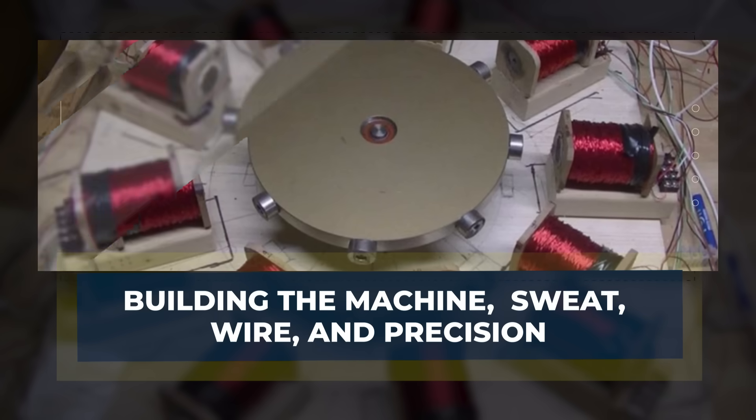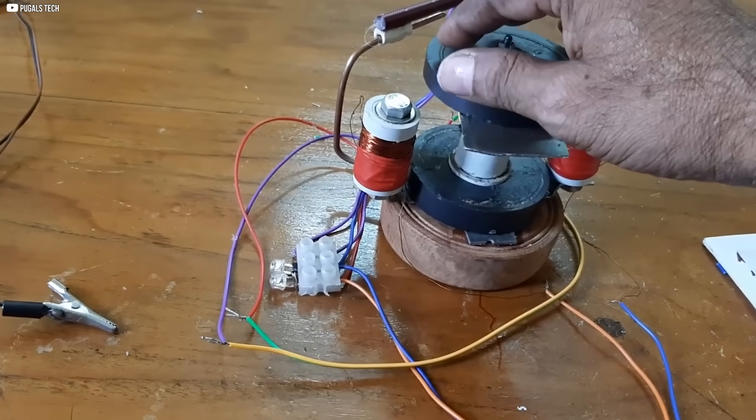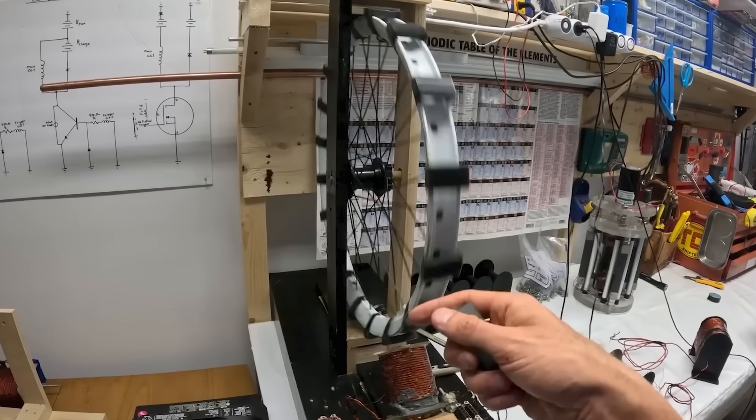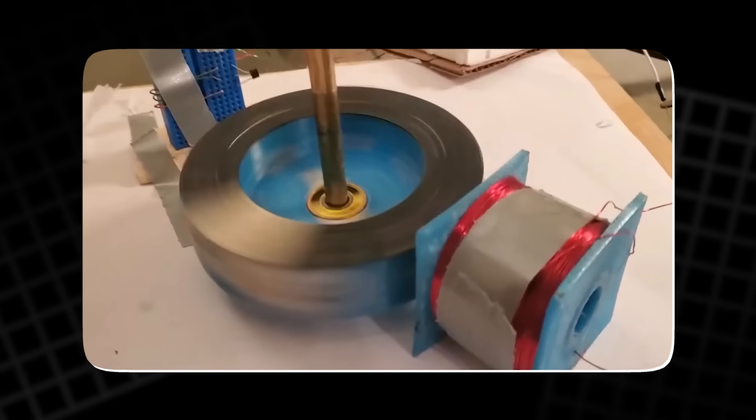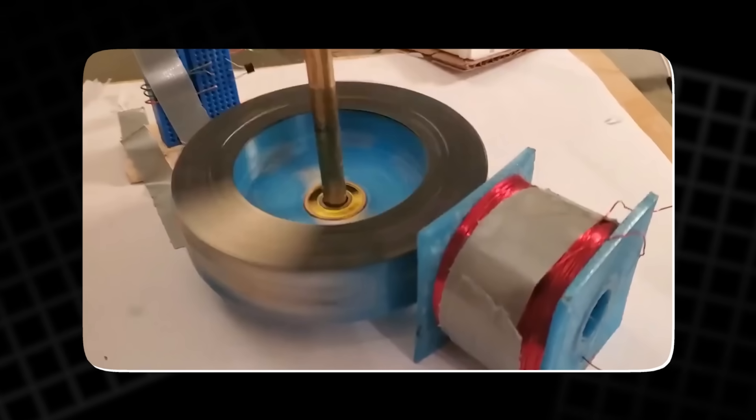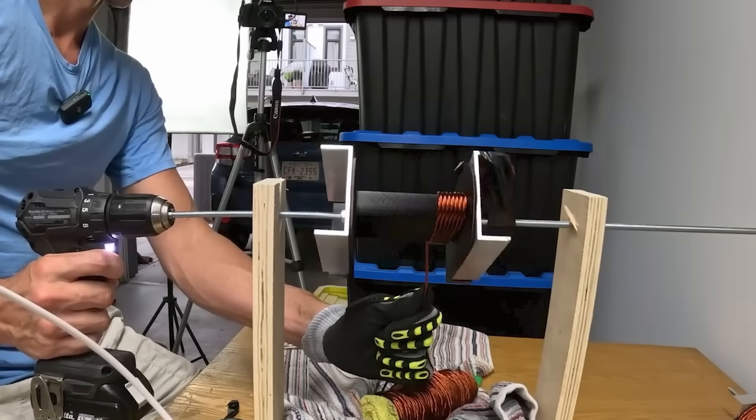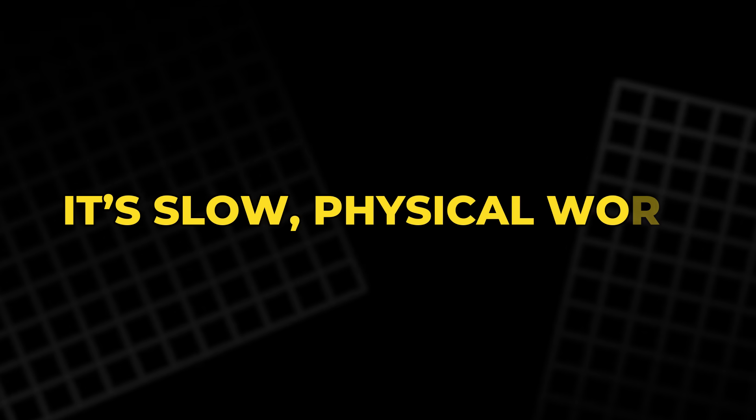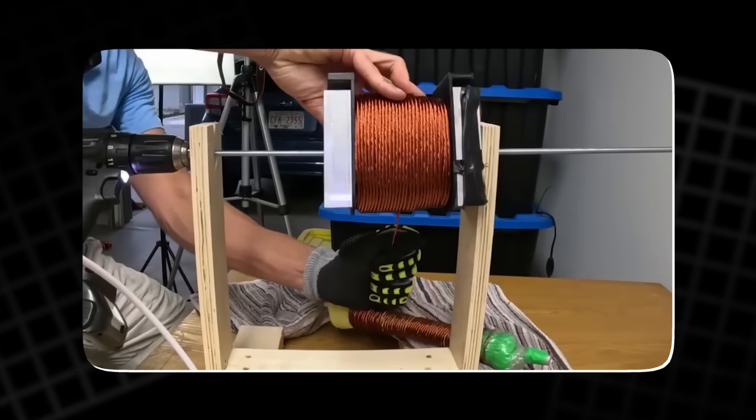Building the machine. Sweat, wire, and precision. No lab coats, no corporate funding. Just long days, calloused hands, and a garage filled with parts. This isn't theory anymore. It's a machine taking shape piece by piece. Every coil is wound by hand. Every wire is carefully laid, twisted, and inspected. It's slow, physical work. But every turn of the drill, every loop of copper, is a step closer to something extraordinary.